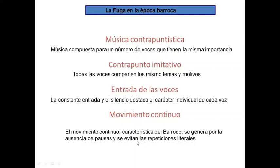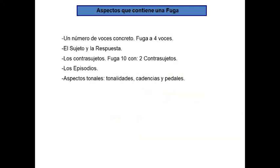La textura de la fuga nace ya con el punto de imitación del motete renacentista. El tema de la fuga lo llamamos sujeto o respuesta, dependiendo de si aparece en una tonalidad o en otra. Normalmente la composición de una fuga es a varias voces, en este caso a cuatro voces, y pueden aparecer contrapuntos obligados llamados contrasujetos. En el caso de la fuga número 10, aparecen dos contrasujetos.